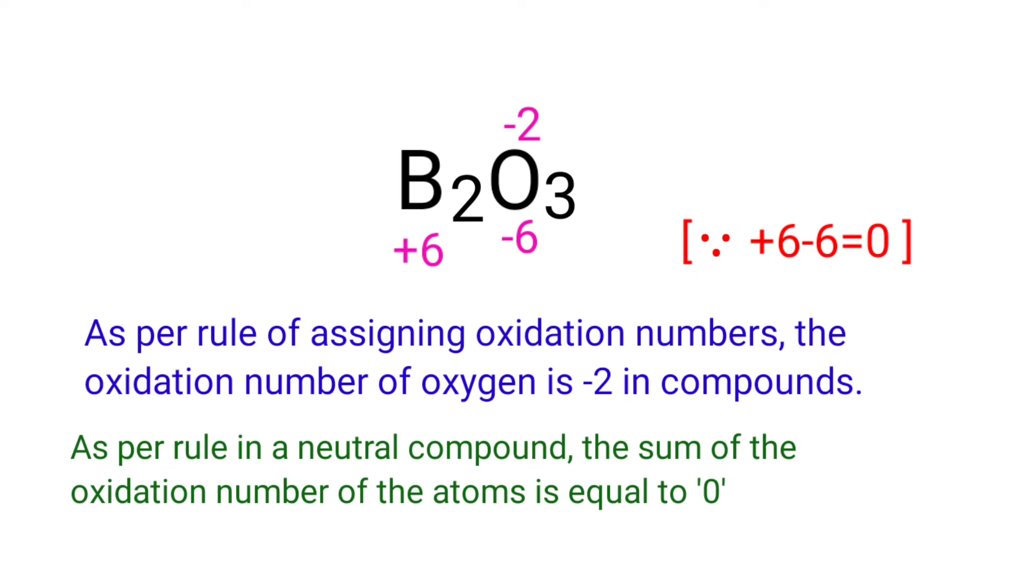In the B2 element, there are two boron atoms present. So we can write the oxidation state of boron is plus three.